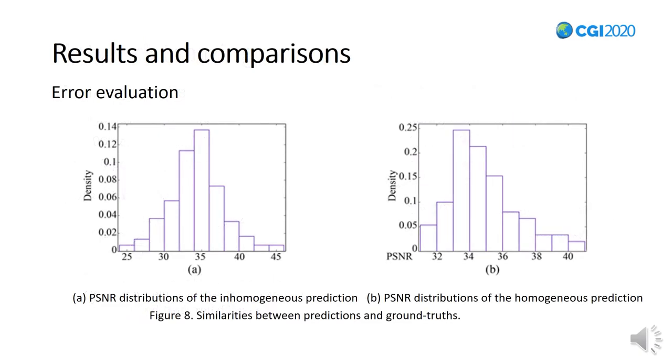We now evaluate the performance of our network in height predictions. Instead of computing the mean squared errors, we use PSNR to measure the similarities between the predictions and the ground truth. For the testing images, the average PSNRs are 34.35 and 34.84 respectively.